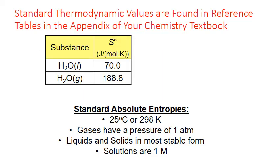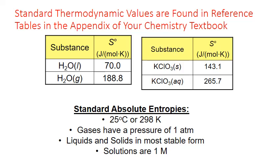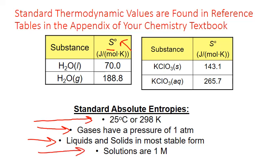Standard absolute entropies are one of the thermodynamic values found in reference tables in the back of any general chemistry textbook — you can also find them online. They're represented by a capital S with a degree sign, which indicates that these measurements apply to standard thermodynamic conventions: 25 degrees Celsius or 298 Kelvin, gases at a pressure of one atmosphere, liquids or solids in their most stable form — for example, solid carbon is assumed to be graphite, not diamond — and solutions at a concentration of one mole per liter.